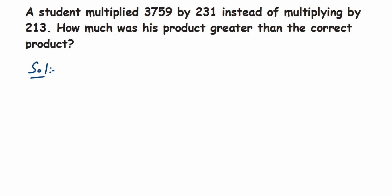Hey everyone, so this is a simple question. A student multiplied 3759 by 231 instead of multiplying by 213. How much was his product greater than the correct product? So by mistake, he had to multiply with 213 but he multiplied with 231. They're asking us how much greater the product was. Product means multiplication.